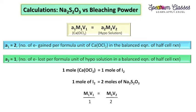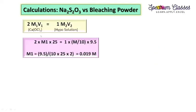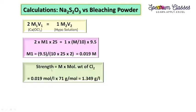Now plugging in the values: 2 × M₁ × 25 = 1 × (1/10) × 9.5, where 25 ml is the bleaching powder volume taken and 9.5 ml is the sodium thiosulphate consumed. Solving for M₁, I get 0.019 mol/L. To find the strength in grams, I multiply molarity by the molecular weight of Cl₂: 0.019 mol/L × 71 g/mol = 1.349 g/L.